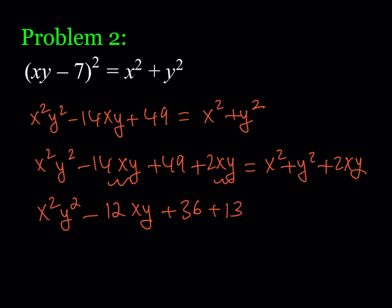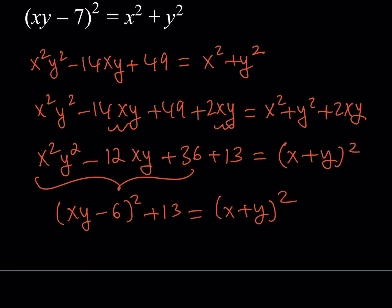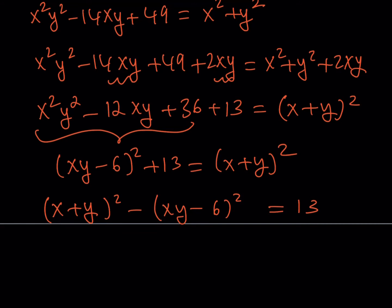We can write the left-hand side as (xy − 6)² + 13, and the right-hand side as (x + y)². Rearranging: (x + y)² − (xy − 6)² = 13. Now I have a difference of two squares.